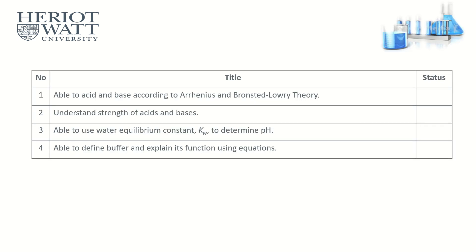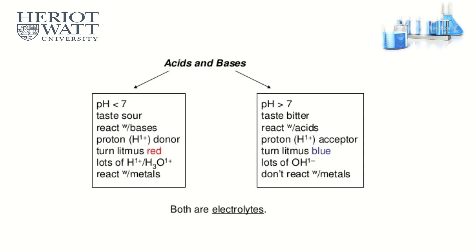These are the learning outcomes you need to achieve: number one, able to identify acid and base according to Arrhenius and Bronsted-Lowry theory; understand strength of acids and bases; able to use the water equilibrium constant Kw to determine pH; able to define buffer and explain its function using equations.